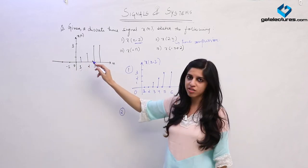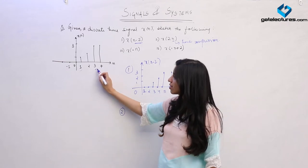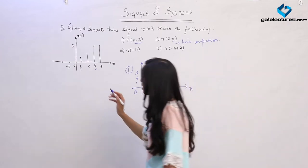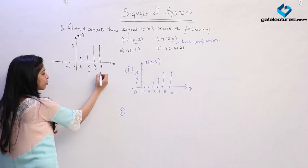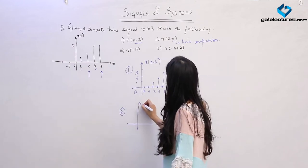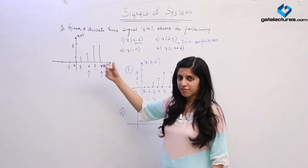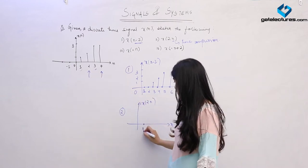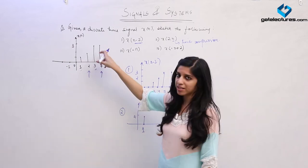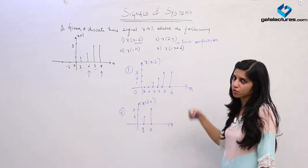These samples are going to be lost because of compression in time — they would no longer be retained, since when divided by 2 they are not integers. So we are going to have only 2 samples: one lying at n=2 and the other at n=4. After time compression this signal is going to have only 2 samples — the one previously at n=2 is now at n=1 with value 2, and the one at n=4 is now at n=2 with value 3. This is how x(2n) is going to look.